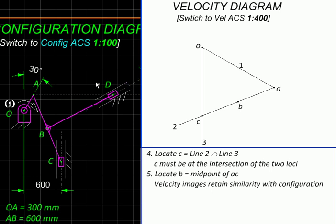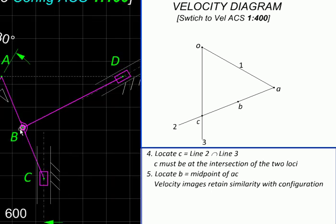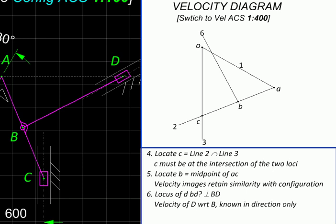From B we can proceed to point D over here. Again, D will be executing a circular motion relative to B, so velocity of D will be perpendicular to BD. So we can get that locus.